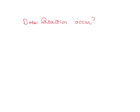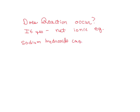We are asked if a reaction occurs, and if yes, write the net ionic equation. We're given sodium hydroxide and potassium nitrate. And this is a null reaction.